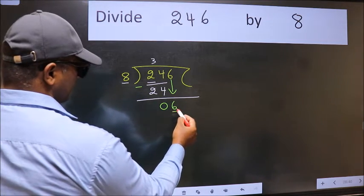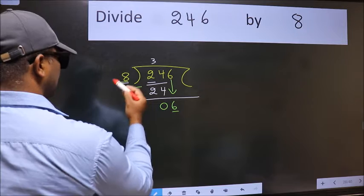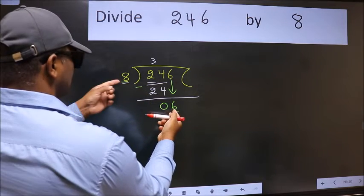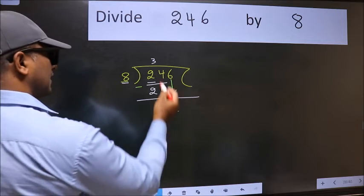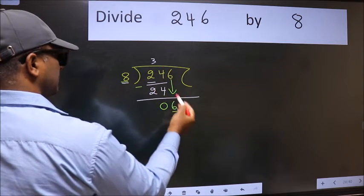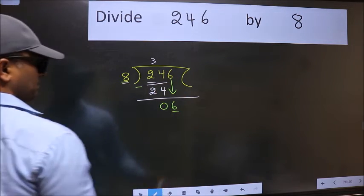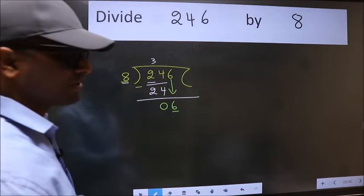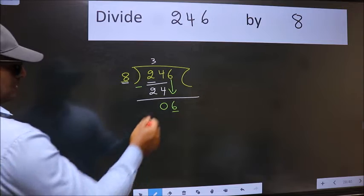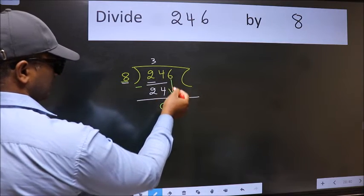Here we have 6 and here 8. 6 is smaller than 8. So what many do is they directly put the dot and take 0, which is wrong. Why is it wrong? Because just now you brought this number down, and in the same step you want to put the dot and take 0, which is wrong.